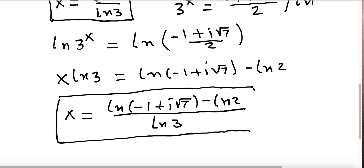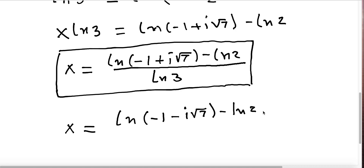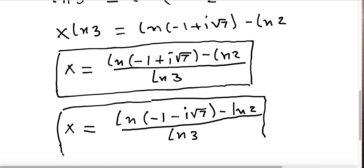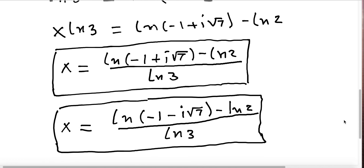Based on similar work, the other complex solution only differs in the sign: x equals ln(negative 1 minus i square root of 7) minus ln 2, divided by ln 3. So we have found three solutions in total: one real solution x equals ln 2 over ln 3, and two complex solutions as shown.